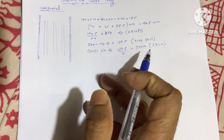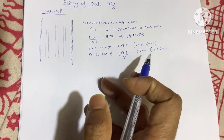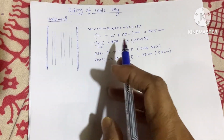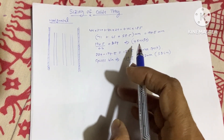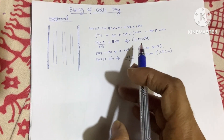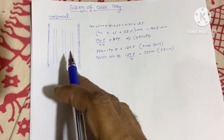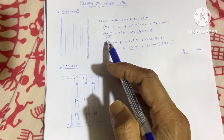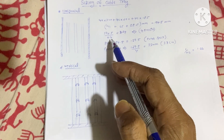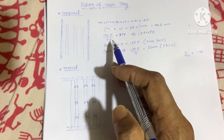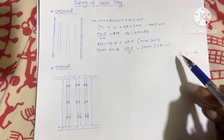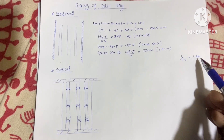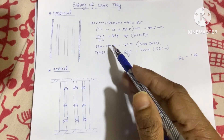We have taken a 0.6 safety factor for this calculation, which means we are dividing by 0.6, equivalent to multiplying by 1.66. This means we are giving 66% extra space for the horizontal cable tray calculation.